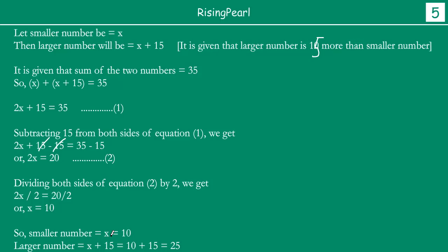So the smaller number is equal to x which is 10. The smaller number was x, which is equal to 10, so the larger number is x plus 15, which is equal to 10 plus 15, which is equal to 25.